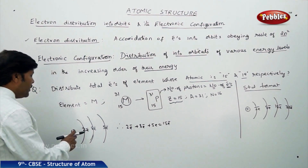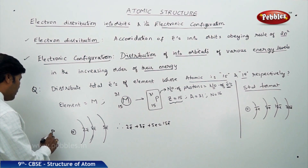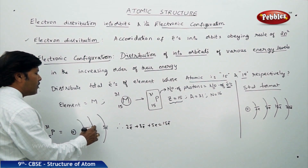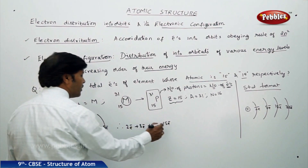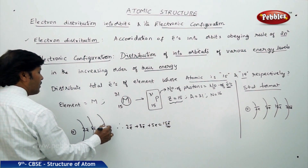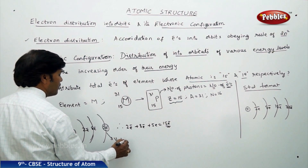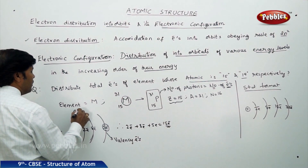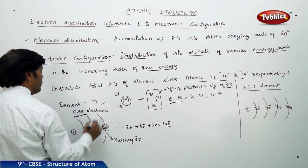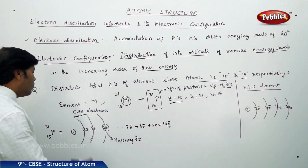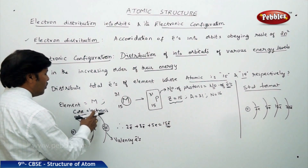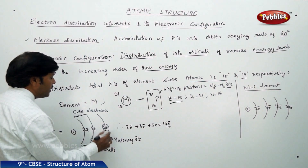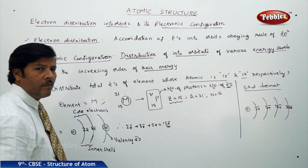So the electron distribution for phosphorus (atomic number 15, mass number 31) is: nucleus, first orbit 2 electrons, second orbit 8 electrons, third orbit 5 electrons. The 5 electrons in the last orbit are called valence electrons, and the 2 and 8 electrons in the inner orbits are called core electrons.